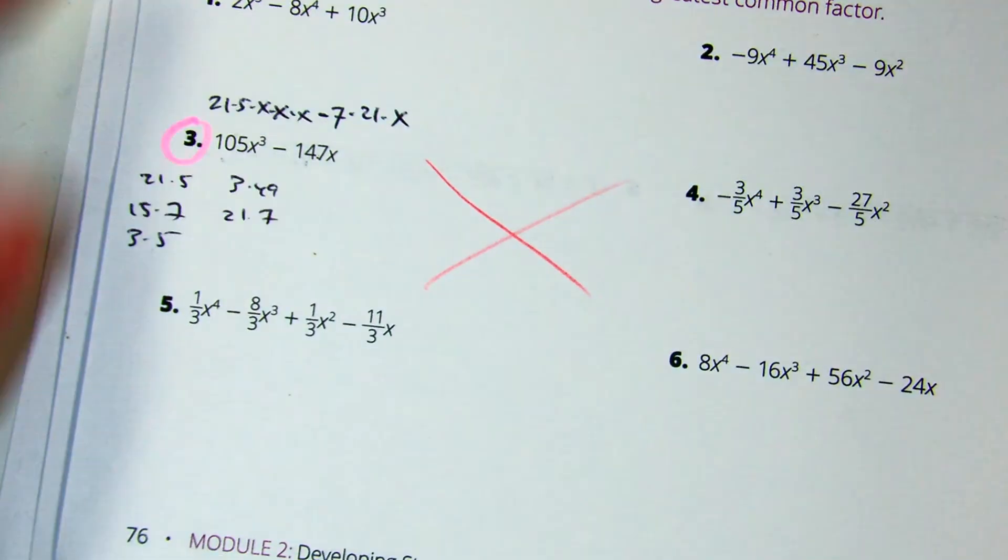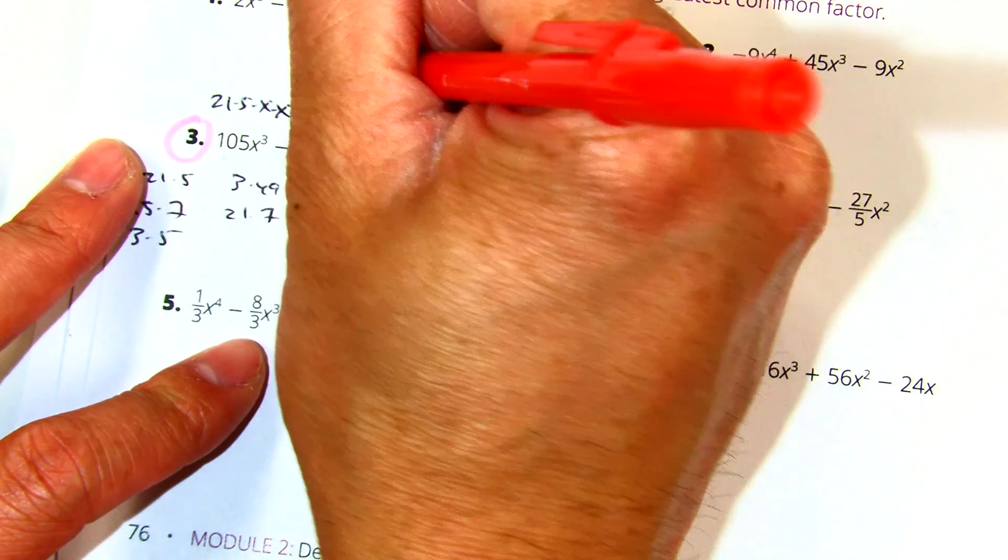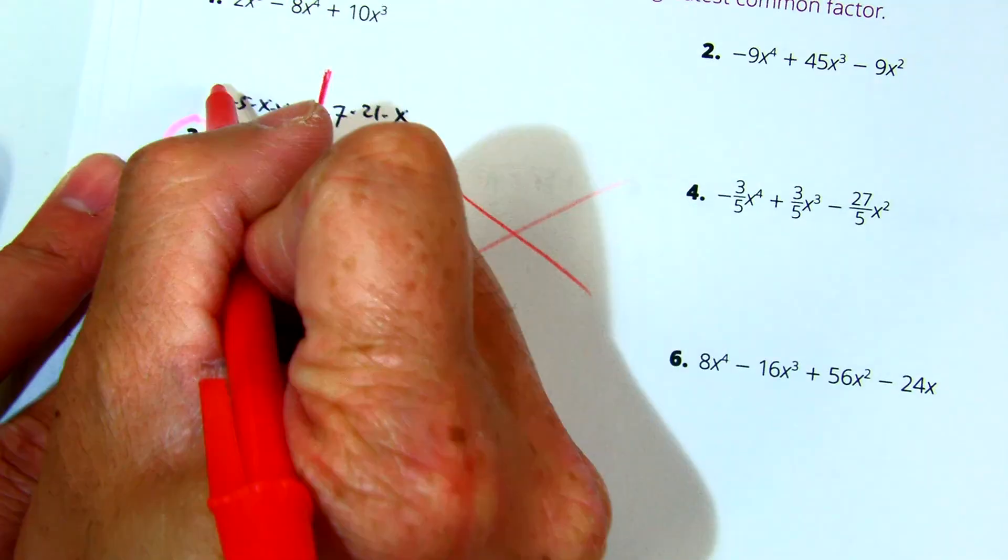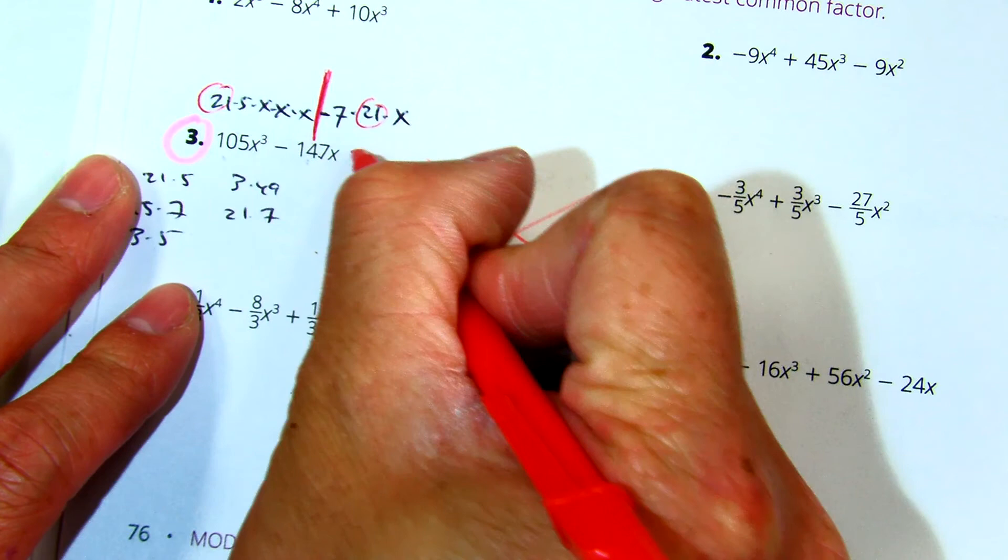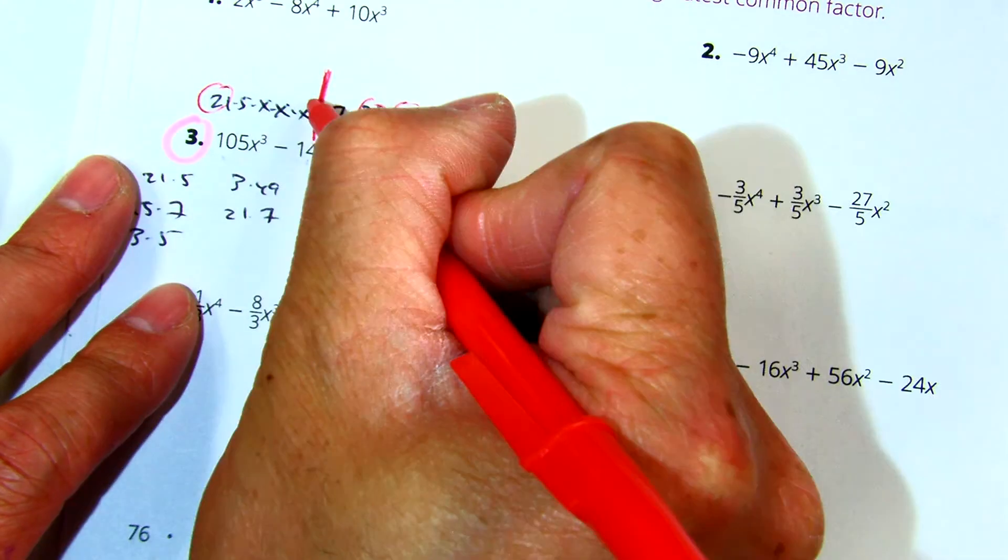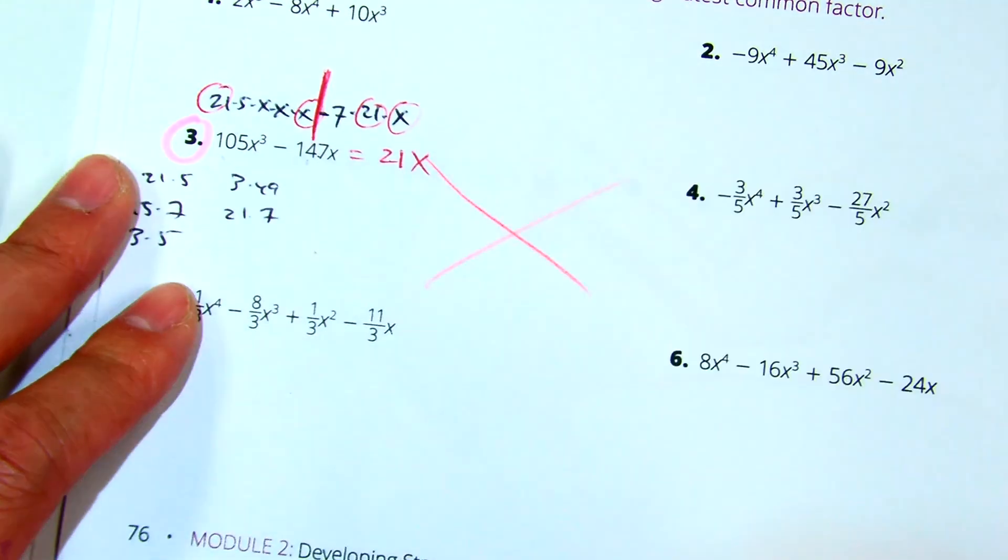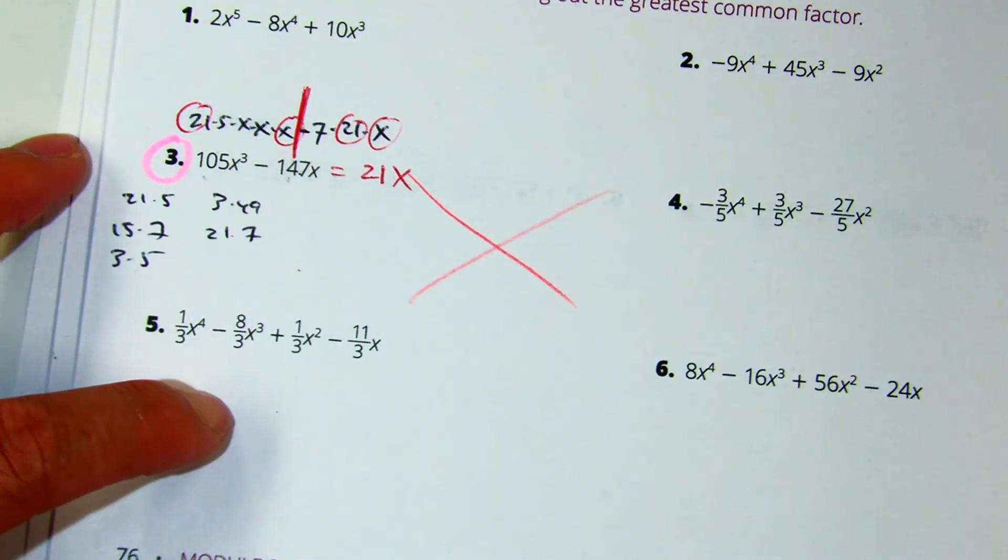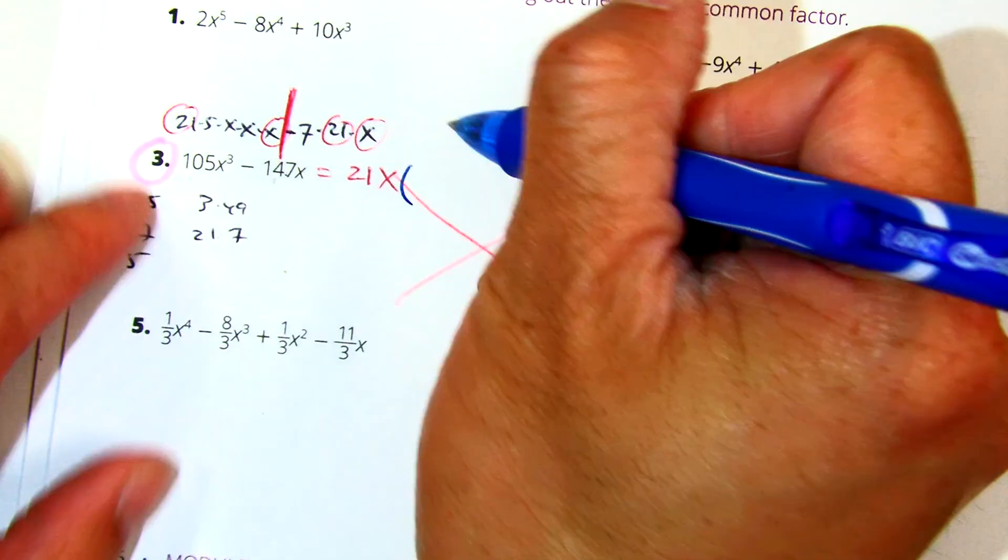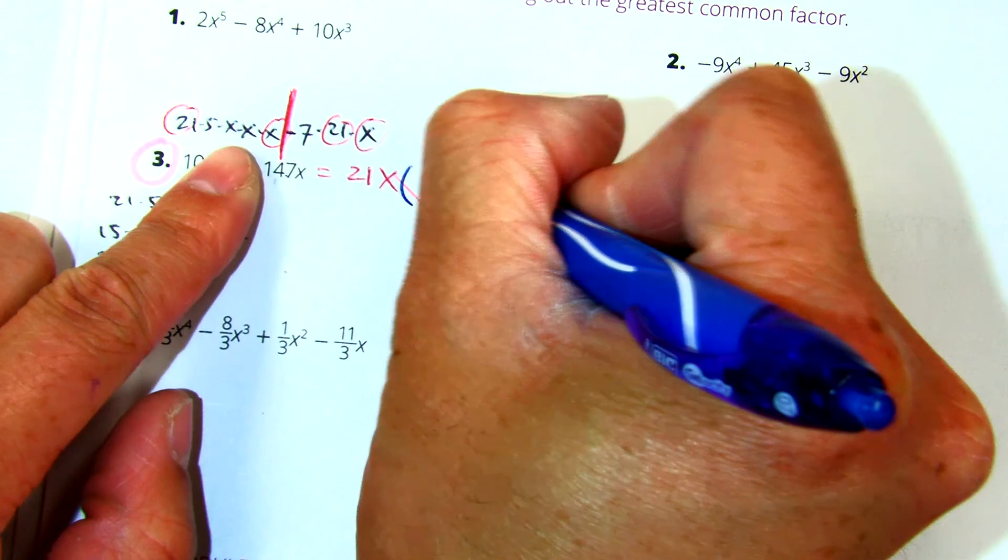Plus, what do they have in common? 21 and 1x. Now, all I have to do is simply write the numbers that are not circled in red. 5x squared minus 7.